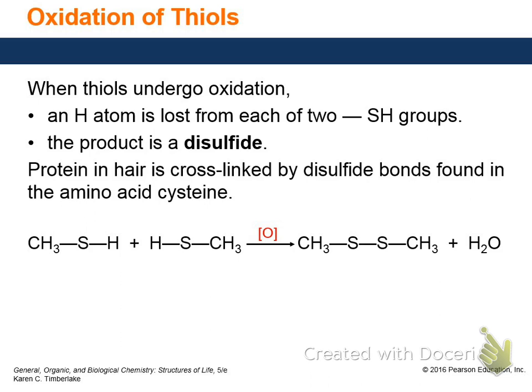Relaxers keep hair straight — you have to grow it out. When a disulfide bridge forms in oxidation, those two hydrogens get removed and the bridge forms. To break it you do the reverse — the reduction process — and you end up with thiols again.